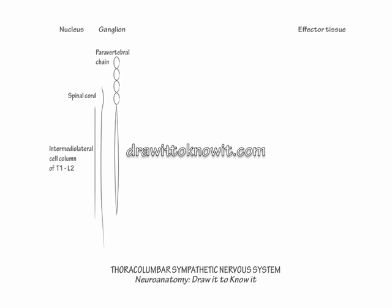The superior cervical ganglion sits at the top of the chain, the middle cervical ganglion beneath it, the inferior cervical ganglion beneath it, and the first thoracic ganglion beneath it. The inferior cervical and first thoracic ganglia combine to form the stellate ganglion.